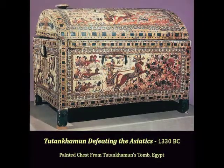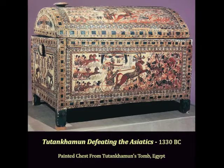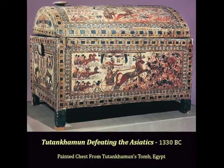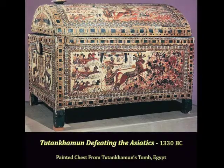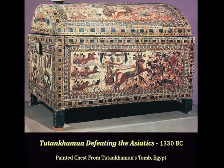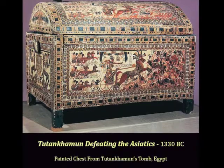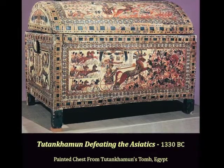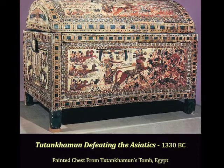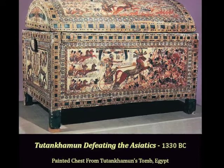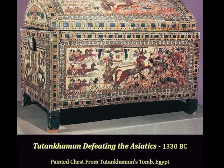Next we see a painted chest from Tutankhamun's tomb, circa 1330 BC, depicting the Egyptian pharaoh leading an attack on the Asiatics from his royal chariot. Although scholars doubt that King Tut ever personally went to war, this chest bears an inscription that reads: 'The good god, the son of Ammon, the valiant one, without his equal, a possessor of strength who tramples hundreds of thousands, who makes them into a pile of corpses.'